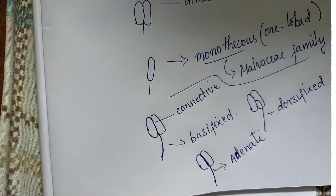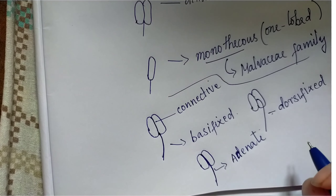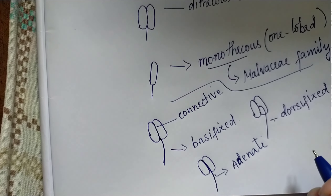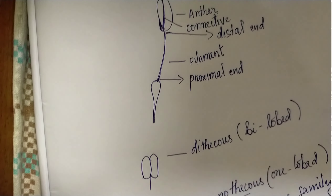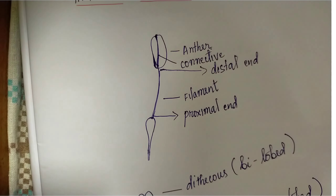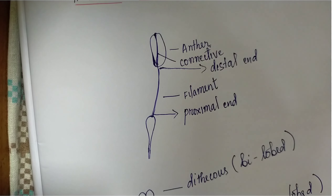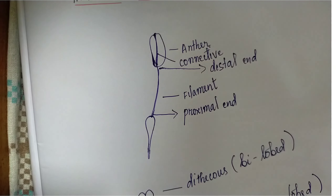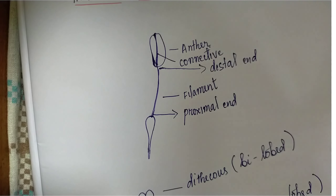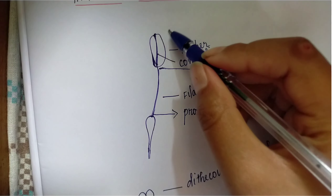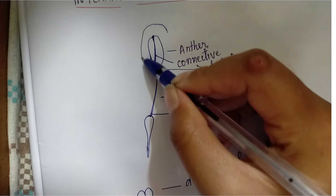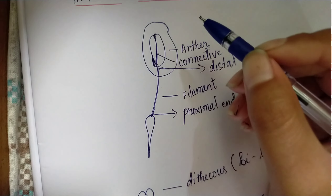That's all about the external structure of a stamen. In the next part, we shall see about the internal structure of this lobe of the anther.